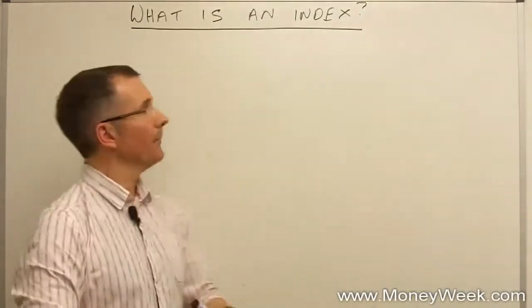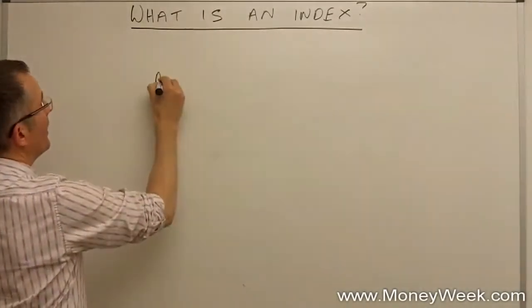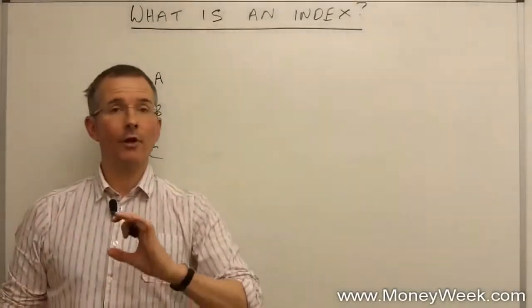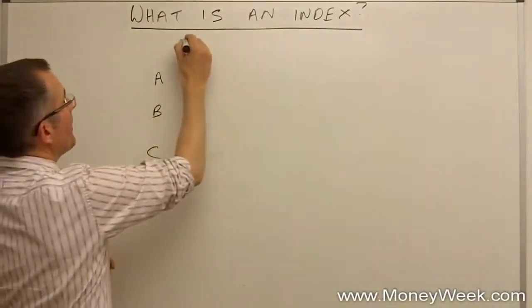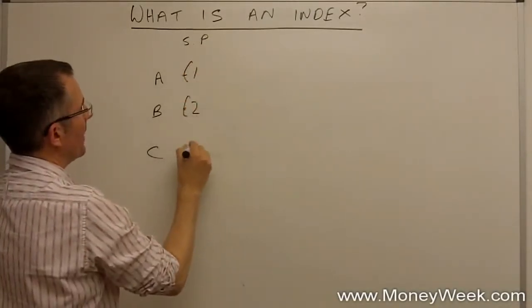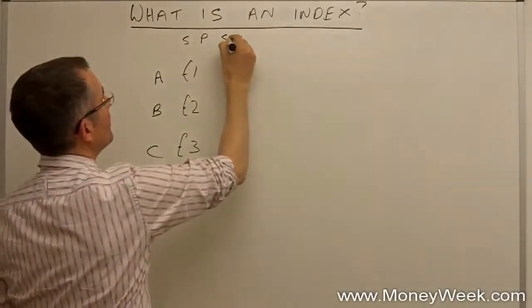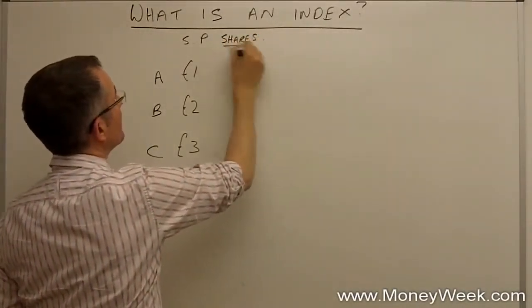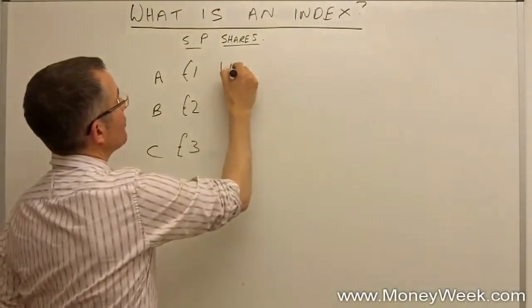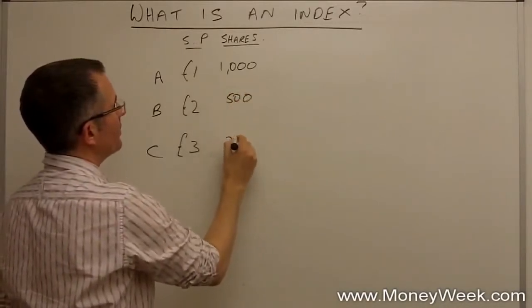To put an index together, I need to find some constituents, something to go in it. Let's have three companies, simply called A, B and C. They are just three companies, so it's going to be an index of just three firms. Let's say the current share price is £1 for A, £2 for B and £3 for C. And the number of shares each company has in issue. They're slightly different sizes. Let's say that the first company has a thousand shares in issue. Company B has 500 shares in issue. And company C just 200.